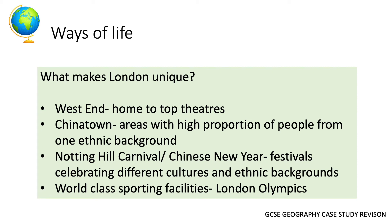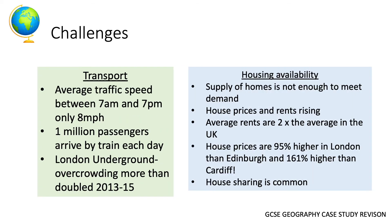There are a number of challenges that London faces. With a growing population, two quite obvious ones are transport and housing. As London becomes more congested, it has an impact on transport infrastructure. Average traffic speeds during the working day between 7am and 7pm are only 8 miles per hour, impacting people's ability to get to work and goods moving around the city. People sat in traffic jams are also likely to be polluting.